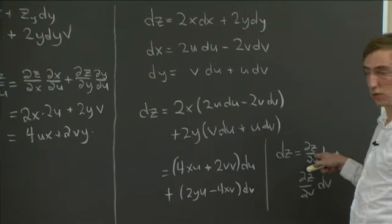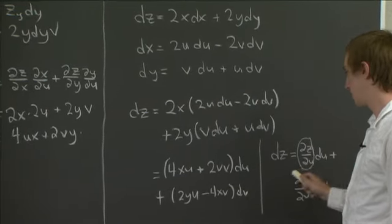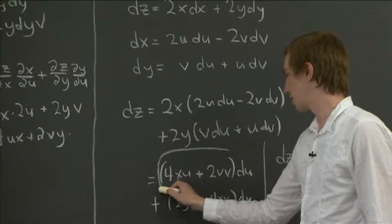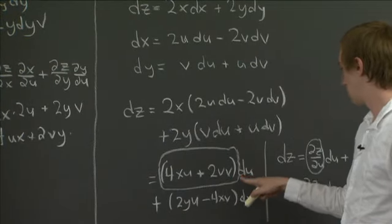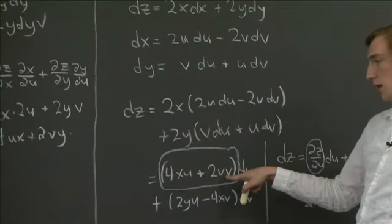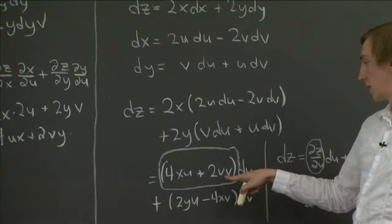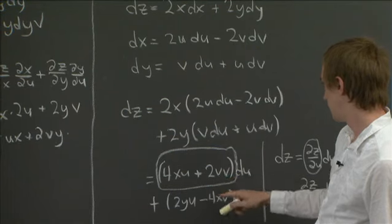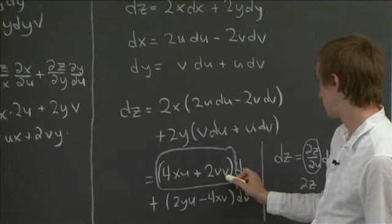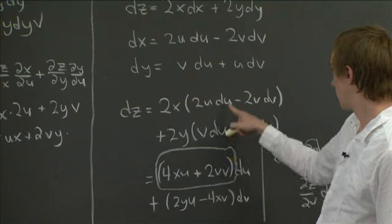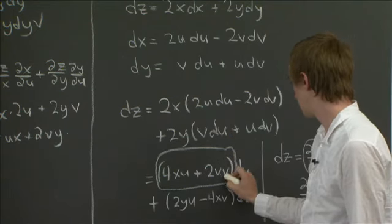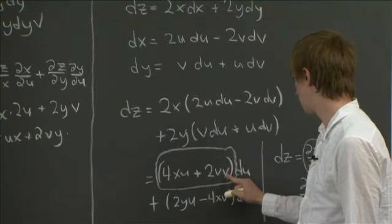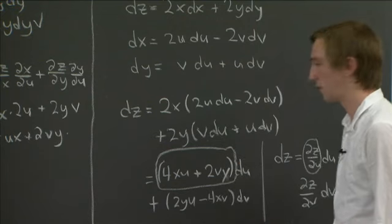So we get that ∂z/∂u is 4xu plus 2, that should be v, one of those is an x. Let's see, so where did this come from? Yeah, one of those is an x, sorry. It's a y. 2vy.